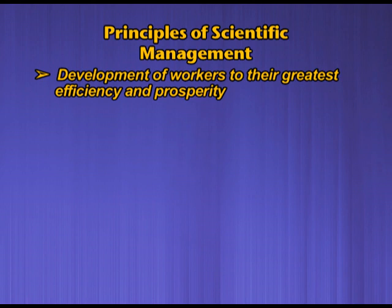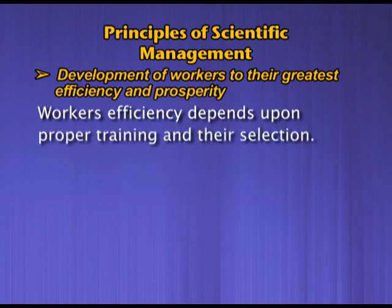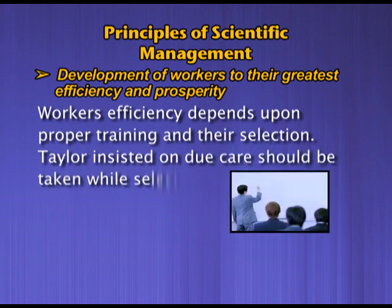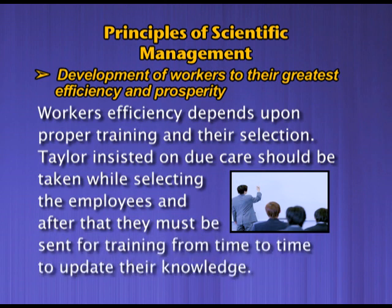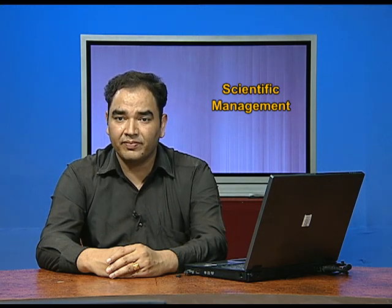The next principle of scientific management is development of workers to their greatest efficiency and prosperity. Workers' efficiency depends on proper training and selection. Taylor insisted that due care should be taken while selecting employees, and after that they must be sent for training from time to time to update their knowledge. Since the world is ever changing, employees must update their knowledge accordingly, and scientific management aims at the overall development of workers.